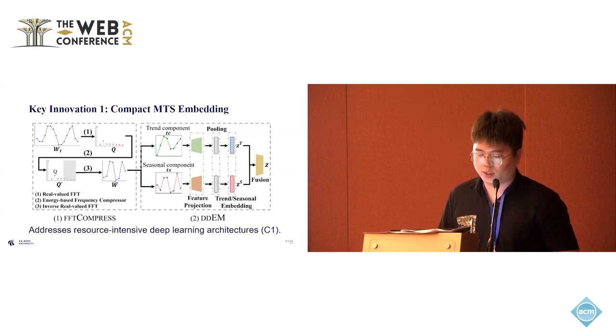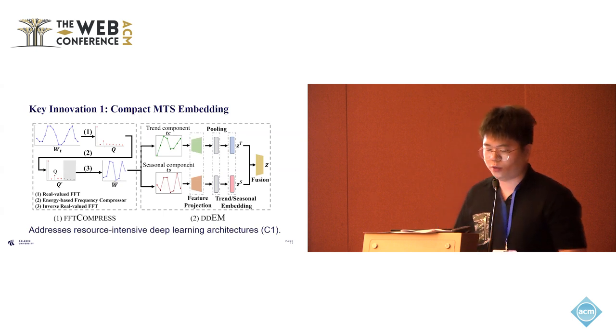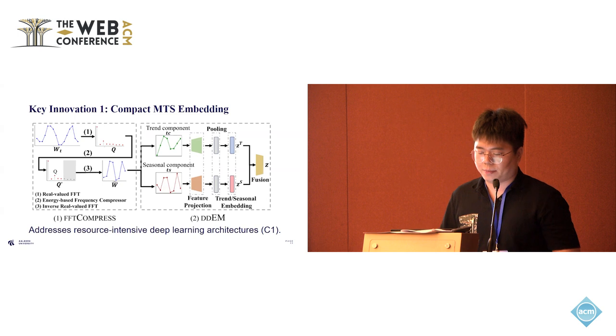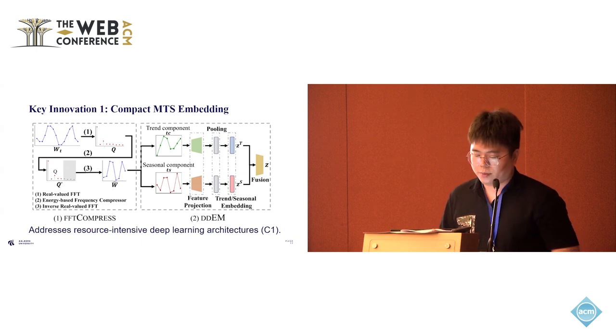First, we address the resource-intensive architecture problem with compact MTS embedding. This embedding method largely reduces the model size and computational demands. Existing deep learning-based methods often use complex networks and overlook variable domain-specific knowledge. We propose to create concise but informative embeddings by two components: FFT-Compress and DDEM.